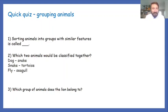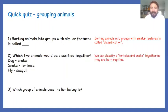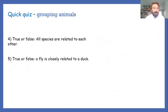Good, you're back already. You're brimming to give me the answers. So let's have a look. Sorting animals into groups with similar features is called classification. I hope you got that, that's what this session has been about. Which two animals would be classified together? Dog and a snake? Not sure. Snake and a tortoise? Possibly. Fly and a seagull? If you said it was a snake and a tortoise you would be absolutely correct because they're both reptiles. Now which group of animals does the lion belong to? And we should know that a lion has fur so it is a mammal. We also know that a dog is a mammal. So let's move on to questions four and five.